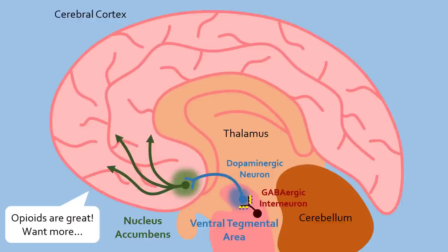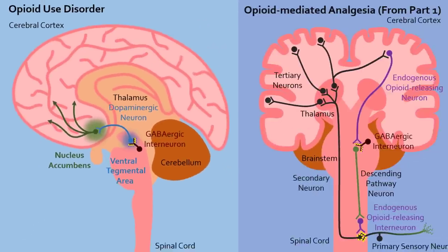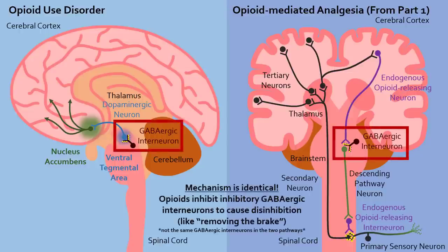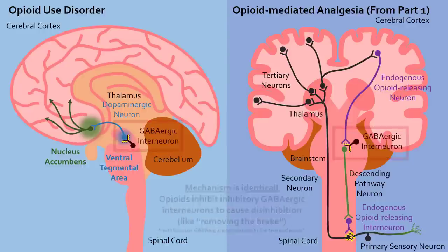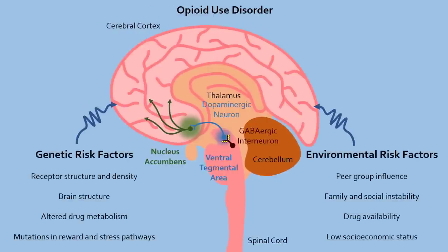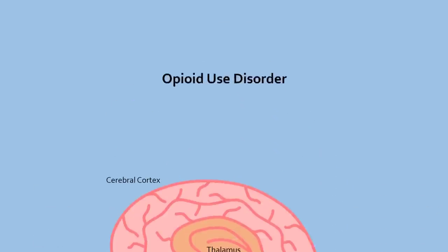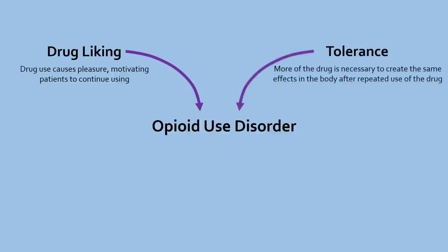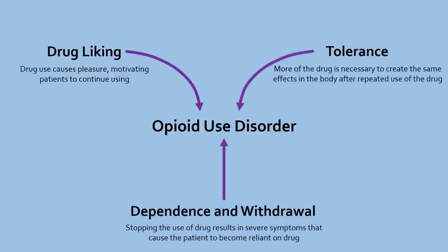This mechanism is almost identical to the way the descending pathway of pain inhibition is activated, also through removing the brake by shutting down inhibitory GABAergic interneurons in the brainstem. The rate at which drug-liking develops varies between people based on their genetics and environment, predisposing certain people to addiction more than others. However, long-term opioid use disorder is not only fueled by simply enjoying using opioids. The effects of tolerance, dependence, and withdrawal are now also key players.